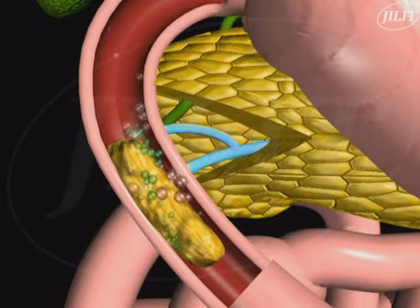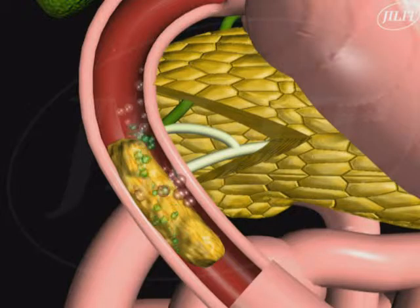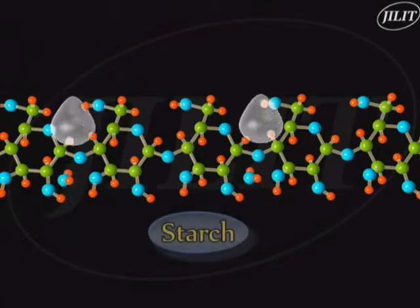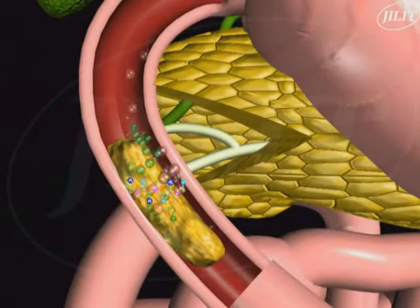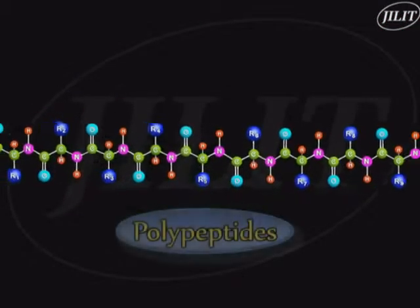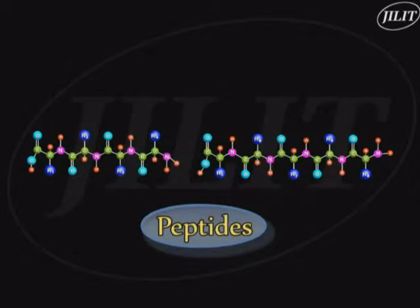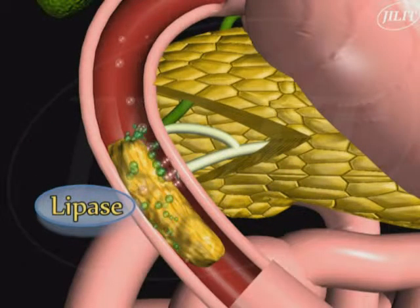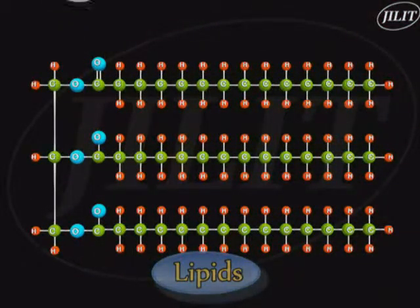The pancreas secretes pancreatic juice into the duodenum via the pancreatic duct. This contains the enzymes pancreatic amylase, trypsin, and lipase. Pancreatic amylase completes the digestion of starch to maltose. Trypsin digests polypeptides into shorter chains of peptides. Lipase contributes to the hydrolysis of lipids into fatty acids and glycerol.